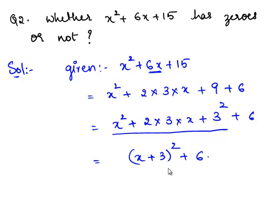For an expression to have a zero, there should exist a value of x for which the whole expression becomes zero. But for this expression, for no value of x, this expression becomes zero.